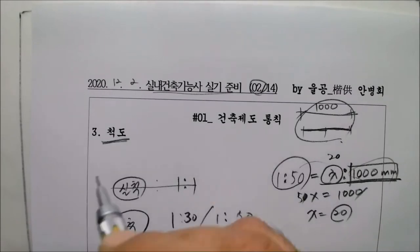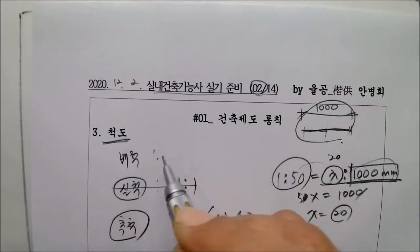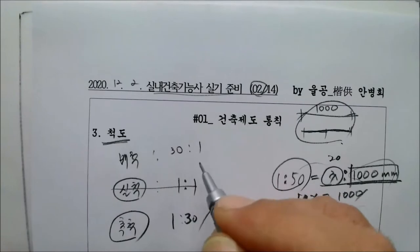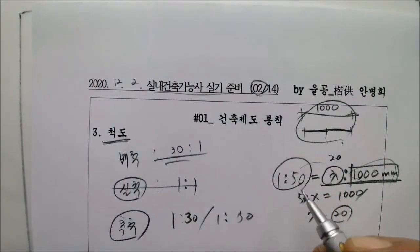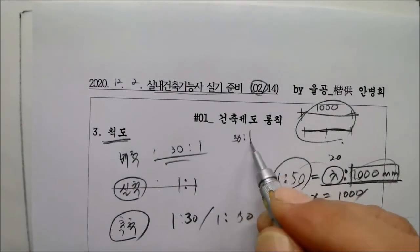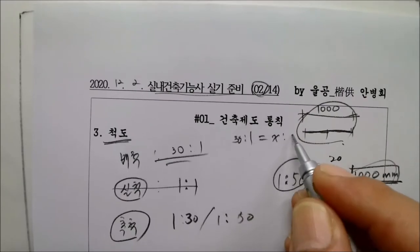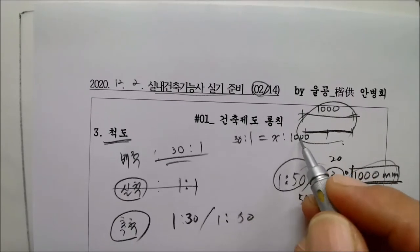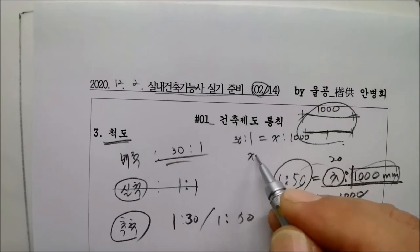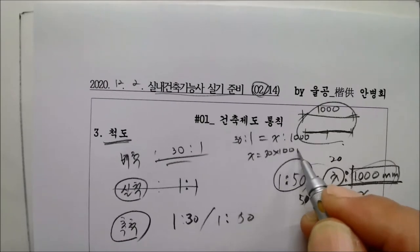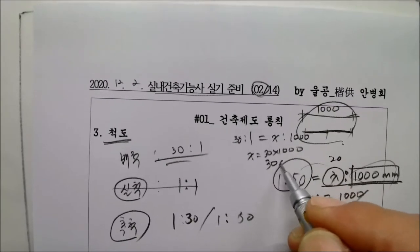자 배척도 마찬가지입니다. 이제 배척. 거꾸로 하죠. 30대1. 이게 무슨 말이에요? 반대로 얘기할게요. 자 30대1은 x대1미터다. 1000이다. 그럼 어떻게 돼요? 그렇죠? x는 30 곱하기 1000. 3만. 뭔 의미에요? 실질적으로 더 크게 그리는 거에요.